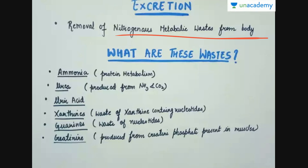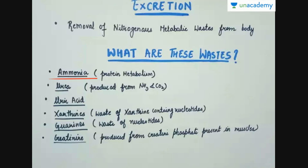Now what are the other wastes that require the excretion process through kidneys? One is ammonia. Ammonia is a very important product during protein metabolism. Whatever proteins are synthesized, they are changed from one form to another, producing a large amount of ammonia. This ammonia is highly toxic in its free form in our body, so it is converted into a less toxic form — urea — and then excreted through the kidneys. So this is one of the major waste products, and urea is produced from ammonia.